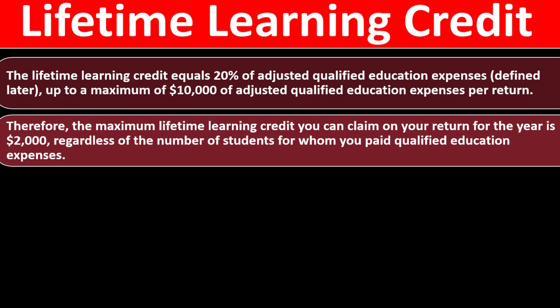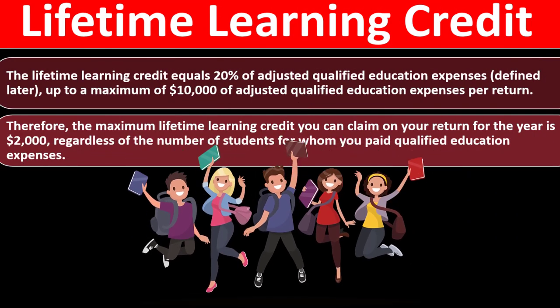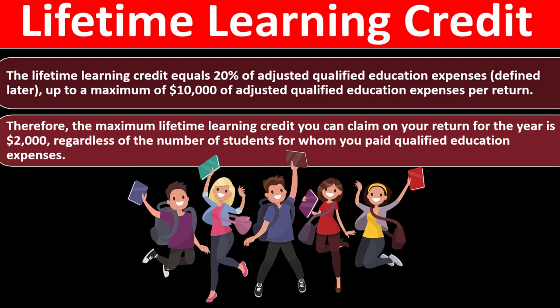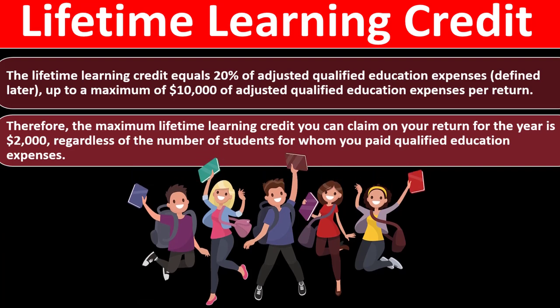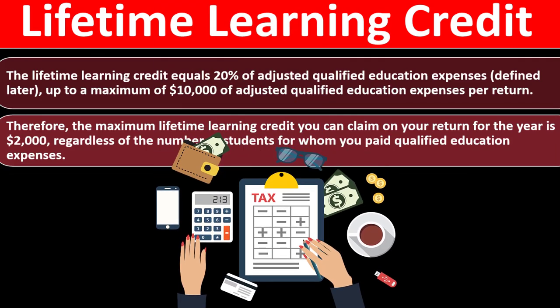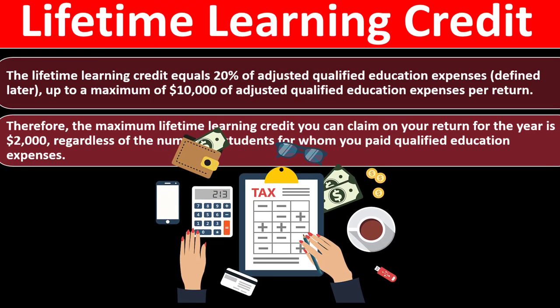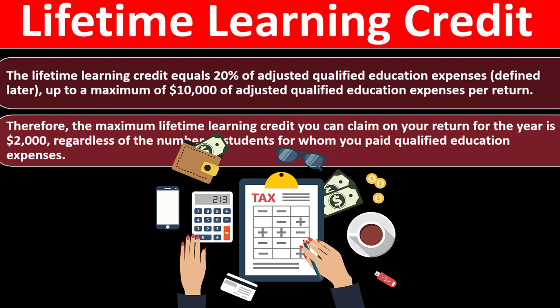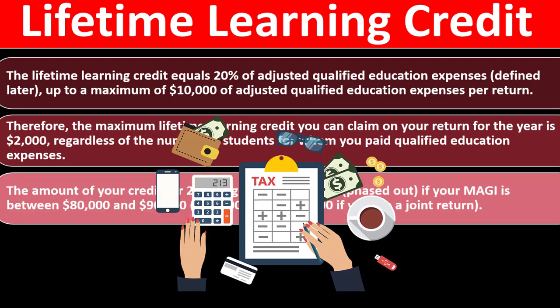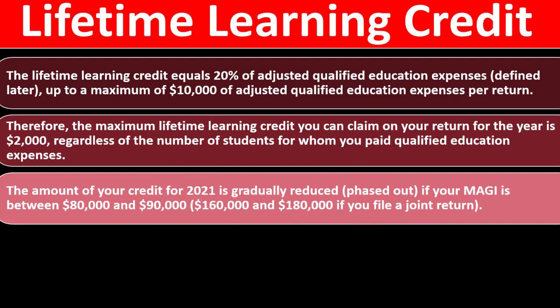The maximum Lifetime Learning Credit you can claim is $2,000 per tax return, regardless of the number of students for whom you paid qualified education expenses. Unlike the American Opportunity Credit which was calculated per student, the Lifetime Learning Credit is capped on a per-tax-return basis. So even with multiple qualifying students, you're still capped at $2,000 total.